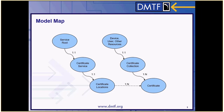There are four resources defined for Certificate Management. We have our Certificate Service hanging off of Service Route, and subordinate to that, we have our Certificate Locations resource. We also have Certificate Collections and Certificate Instances defined to be subordinate to various devices, user accounts, or other types of resources.